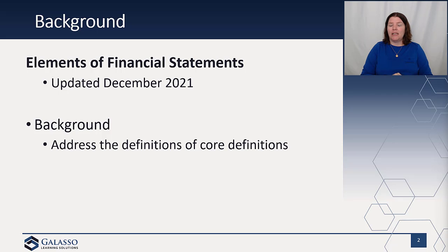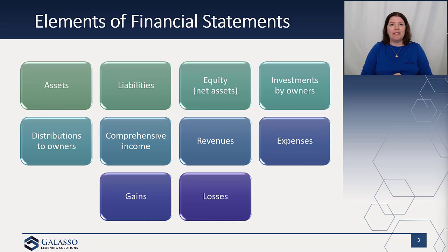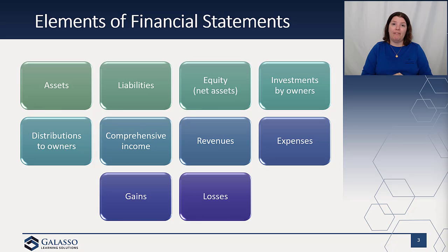Elements of financial statements were updated, and they were really looking at the definitions of our core elements — what are these things that we put on the financial statements. They retained the types of elements we have: assets, liabilities, and equity, which go on the balance sheet. Obviously, if we're a nonprofit, that equity would turn into net assets. The Concept Statements address both for-profit and not-for-profit entities.